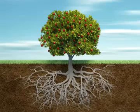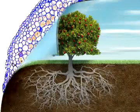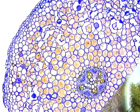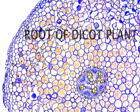The internal structure of roots is in many ways similar to the structure of the stems to which they are attached. This is a microscopic view of a very thin slice of the root of a dicot plant that has been stained to enhance its cellular features.